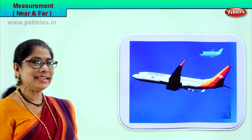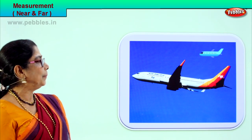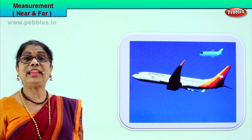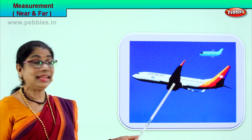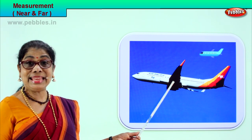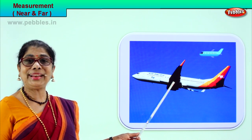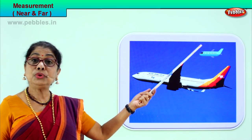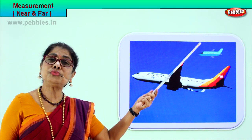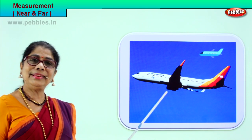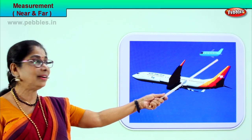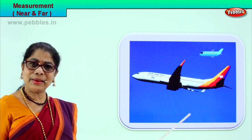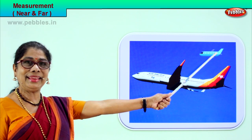Look up in the sky - there are airplanes flying by. One is flying low and close, so we say this airplane is near. You can see it so clearly. But look at that airplane flying high - so far away it looks so small. Near, far.